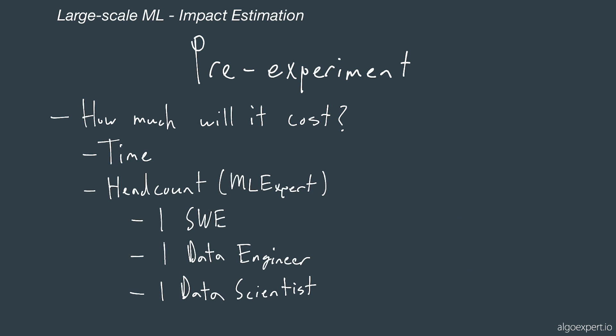Beyond just time, we need to figure out how many people we need to run the experiment. Assuming that all of these people are ML experts, it's usually a minimum of three for small to medium-sized companies — typically a software engineer, a data engineer, and a data scientist. If you're working at a very early-stage startup, it is possible to have an experiment run with a single person's effort.